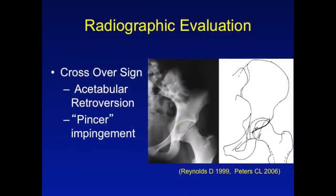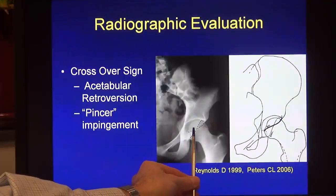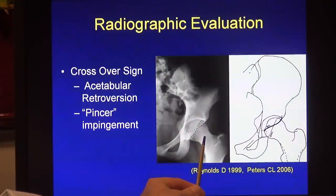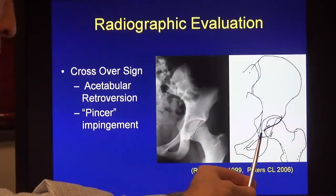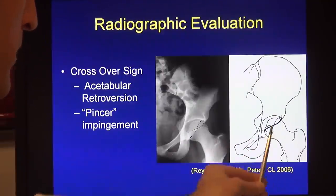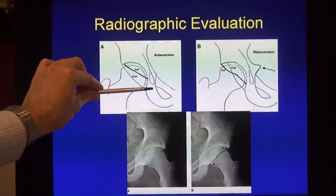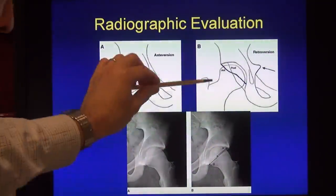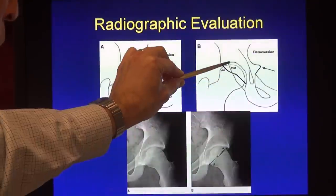Moving on to radiographic evaluation, femoroacetabular impingement, particularly when associated with acetabular over-coverage, is represented by the crossover sign. The crossover sign is described as the anterior wall of the acetabulum falling more towards the foot than the posterior column, or the posterior wall. It is drawn as a figure of eight, where the anterior wall sits lower than the posterior wall. This is associated with a condition called pincer impingement. A normal hip has the anterior wall sitting above the posterior wall, whereas the abnormal hip shows that figure of eight pattern.